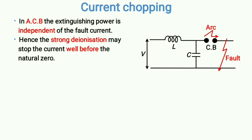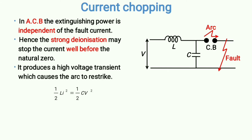Here, however, the arc current or fault current is forcefully stopped well before the natural zero, which creates a huge transient and huge energy dissipation. It produces a high voltage transient which causes the arc to restrike. At natural zero, the change in current (di/dt) is not very large because near natural zero the current is almost going to zero.